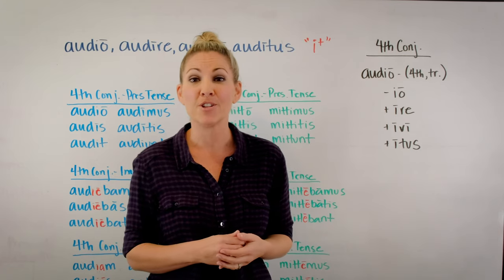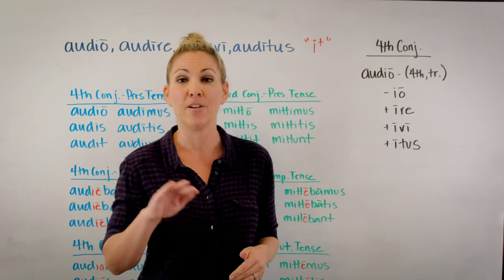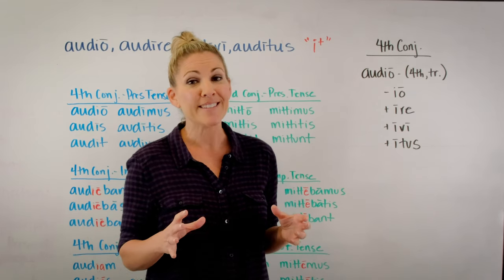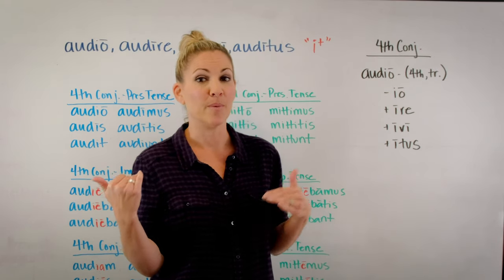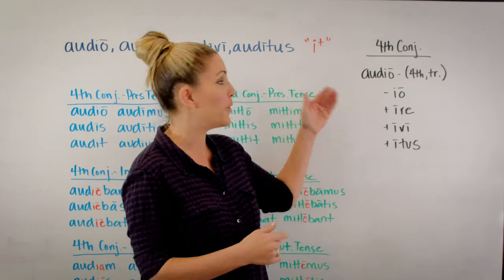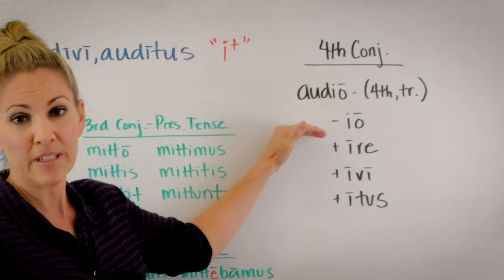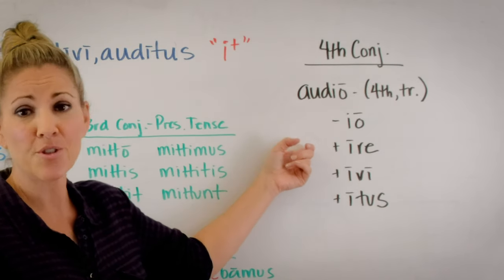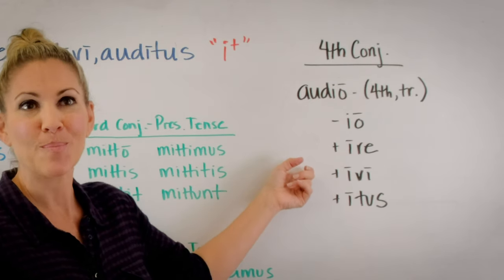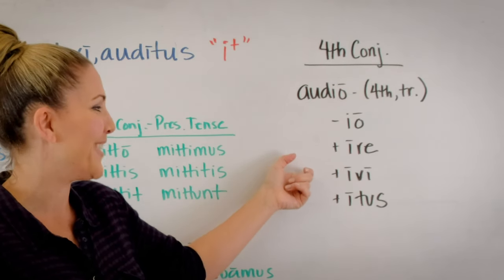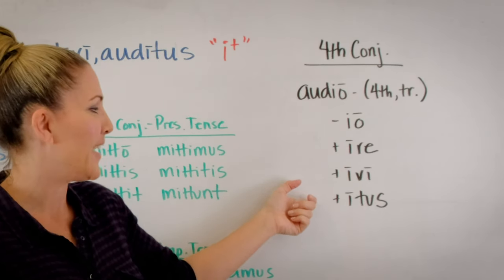Most verbs of the fourth conjugation follow a very predictable pattern. If for some reason they don't, your curriculum will list all the other three principal parts for you. To construct them: look at the first principal part and drop the '-io' — that gives you your stem, 'AUD.' Then add long '-ire' for the infinitive, long '-ivi' for the first person perfect indicative active, and long '-itus' for the participle.